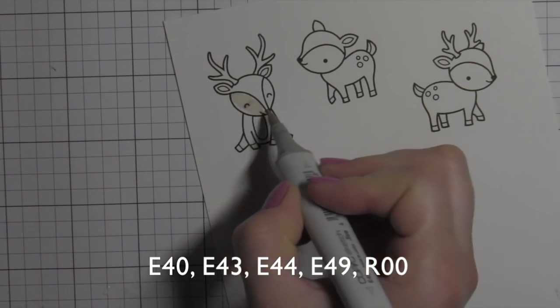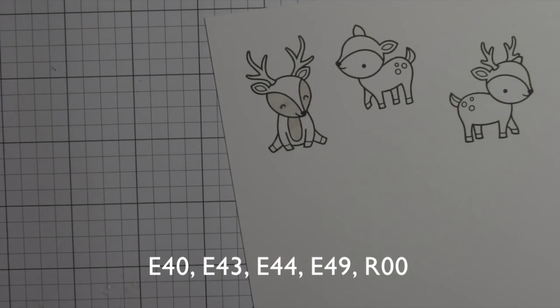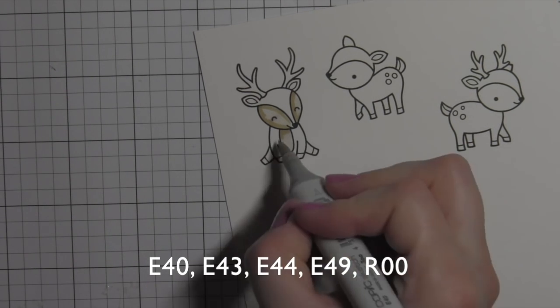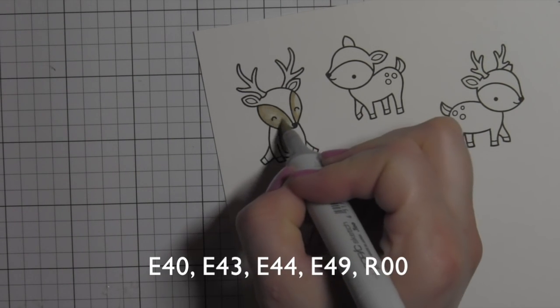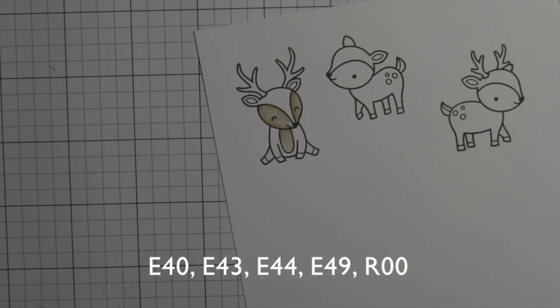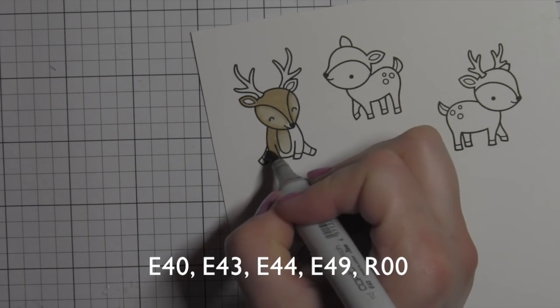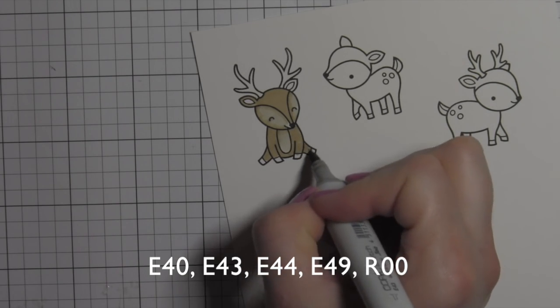And then I'm going to color them in with Copic markers. I am using my favorite color combination: E40, 43, 44, and then 49 for the darker parts like the antlers and the hooves. I'm going to color in these deers. So cute and fun. I love them.